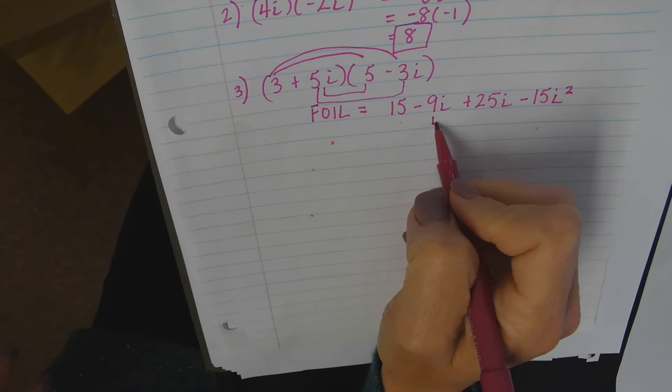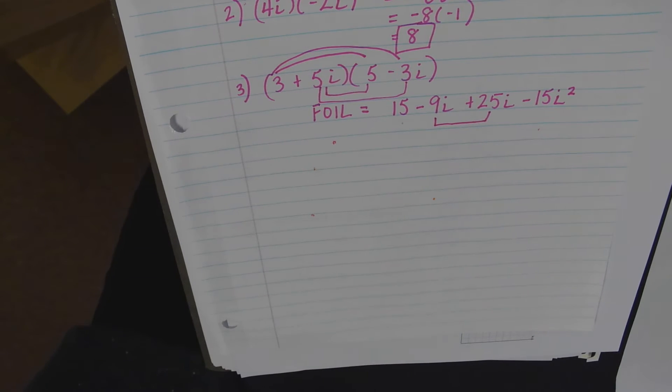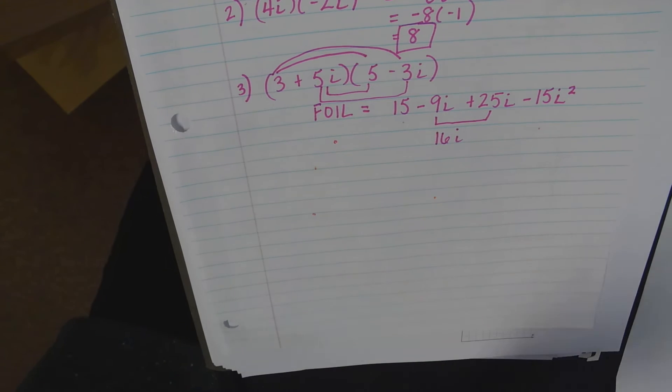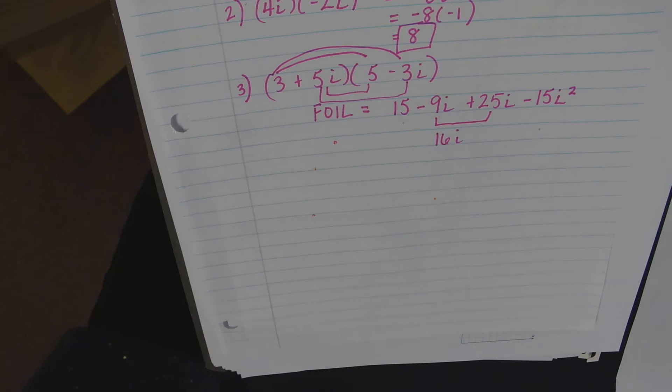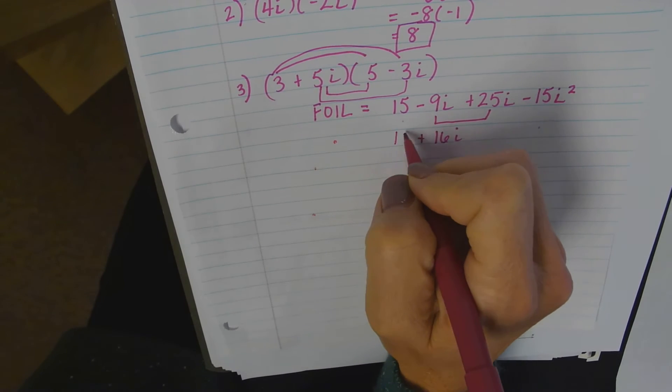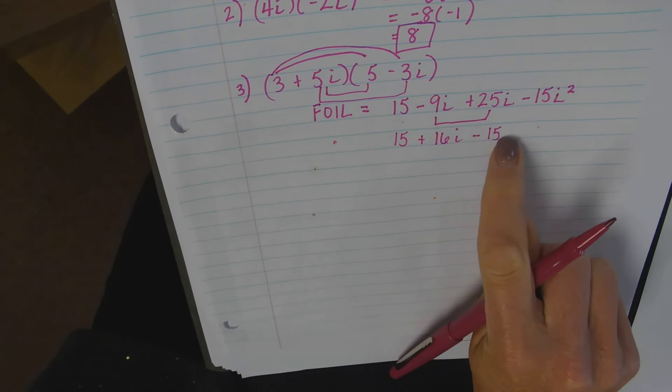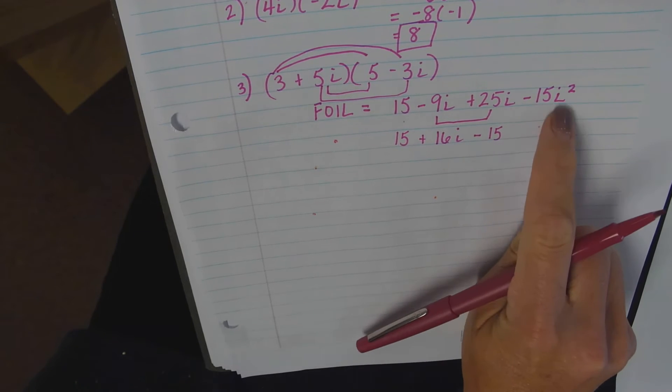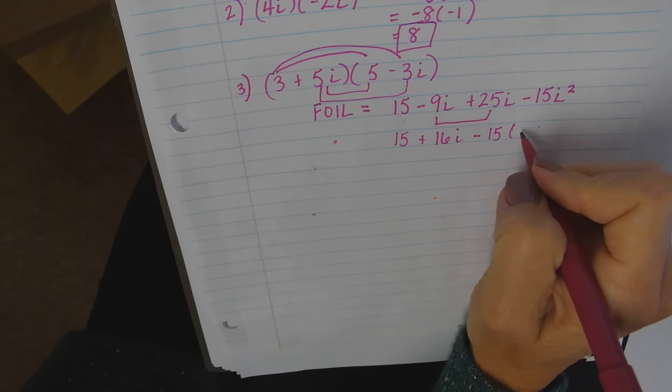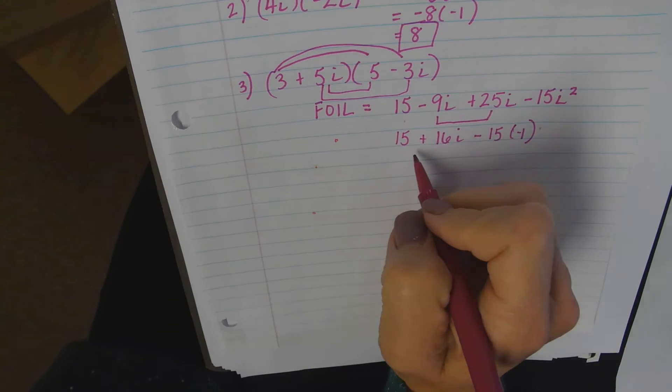The middle terms will simplify. Negative 9i and positive 25i. How many i's is that? Algebra two! Negative nine and positive 25. All right, I'm just bringing down the 15. Now look what I'm getting ready to do. What is i squared equal to? Negative one.